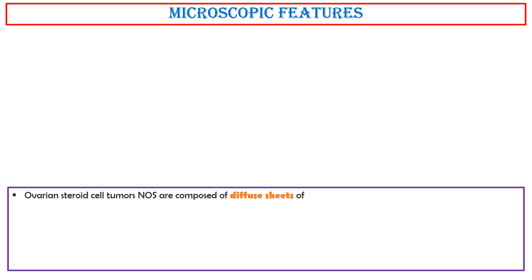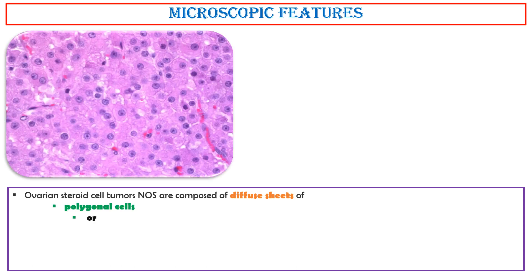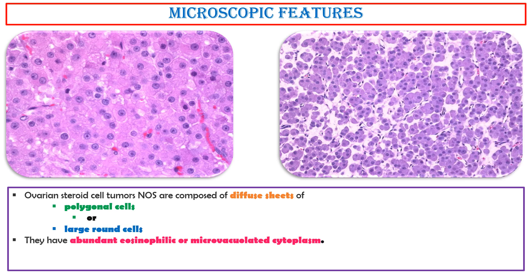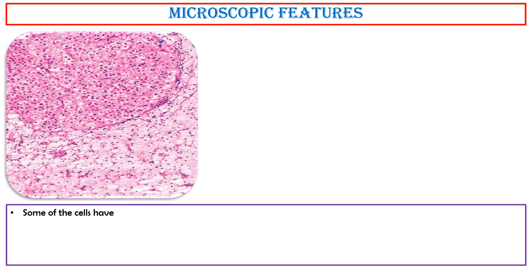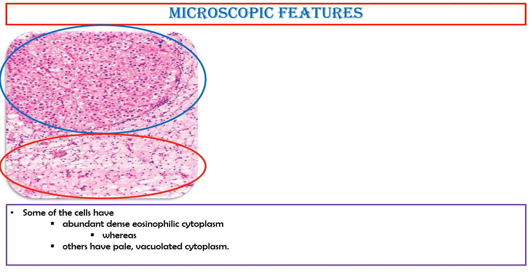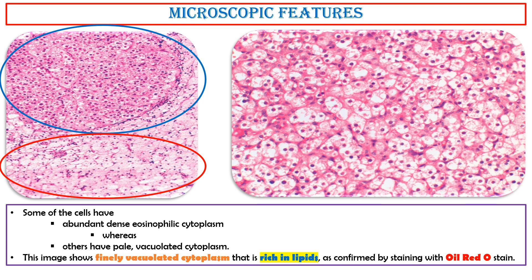Ovarian steroid cell tumors are composed of diffuse sheets of polygonal or large round cells. They have abundant eosinophilic or microvacuolated cytoplasm, distinct cell borders, central nuclei, and prominent nucleoli. Most tumors have no cytologic atypia and at most 2 mitoses per 10 high-power fields. Some cells have abundant dense eosinophilic cytoplasm, whereas others have pale vacuolated cytoplasm. This image shows finely vacuolated cytoplasm that is rich in lipids, as confirmed by staining with oil red O stain.